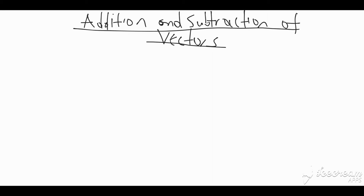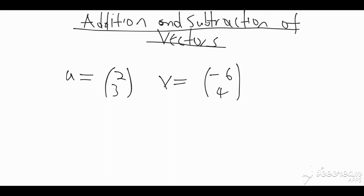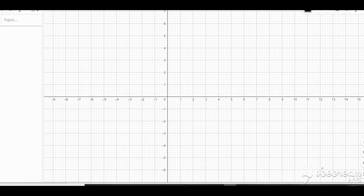Before you watch part 2, please go back and watch part 1. So let us start by looking at two vectors. What if we have u equal the vector (2, 3) and v equal the vector (-6, 4)? What we want to examine is u plus v, and before we add them algebraically, we are going to go to the graph paper and look at the graphical aspect of these two vectors.